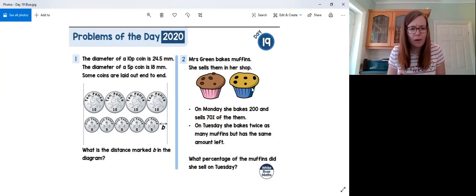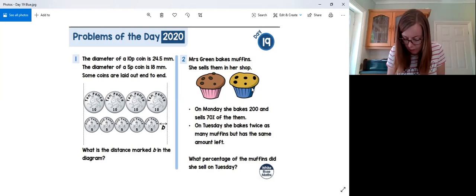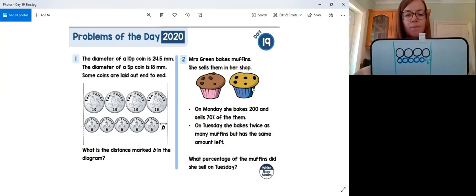So we have one, two, three, four 10p coins, and we have one, two, three, four, five 5p coins. And then we're asked to find the distance labelled B on the diagram. So I've copied it out onto my whiteboard as I've been talking so that we can have a look at this.